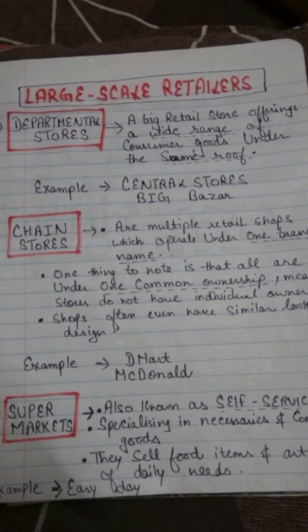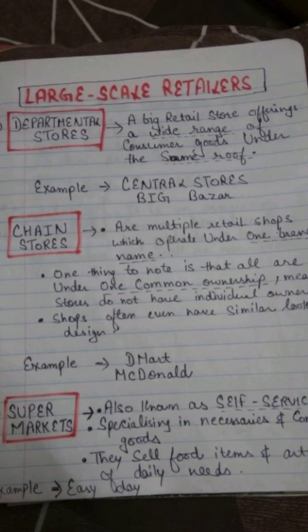In chain stores, ownership of all stores in the chain belongs to one person, and these shops often have similar looks and design wherever they are located. Examples are D-Mart and McDonald's, which have the same price range and appearance wherever you go. Third are supermarkets — also known as self-service stores, specializing in necessities and convenience goods, selling food items and daily-use articles. Examples include Easy Day and Vishal Mega Mart.